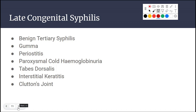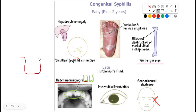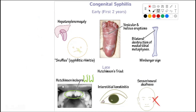A quick review: early congenital syphilis features include hepatosplenomegaly, snuffles, vesicular and bullous eruptions (skin desquamation), and destruction of the proximal tibia — also called the Wimberger sign. Late congenital syphilis includes Hutchinson's incisors (notched teeth), interstitial keratitis, and sensorineural deafness.